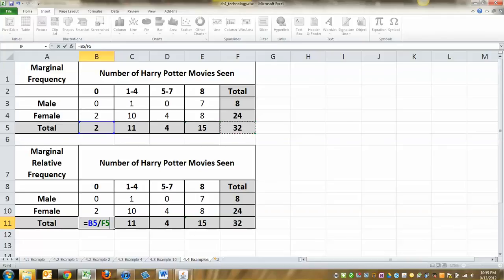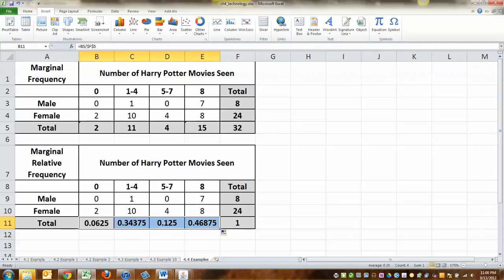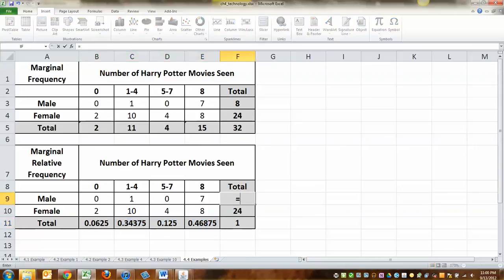Now, I need that 32 to not change no matter what. Because there were 32 students in the class. Period. So I'm going to give it dollar signs by pressing F4. That makes it dollar F, dollar 5. Enter. And then I can drag it over. And then I've got to do it up here too. Equals that 8 divided by that grand total F4. Give it dollar signs. That's what I mean by F4. Press the button F4. And then the bottom should make 1. Because 25%, 75% should add up to 1. And then these four numbers should all add up to 1. And they do. So that's the marginal relative frequency found.